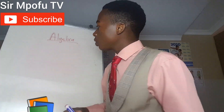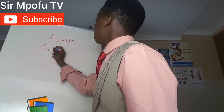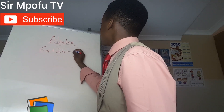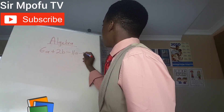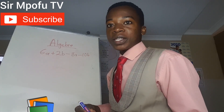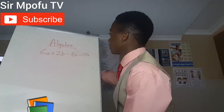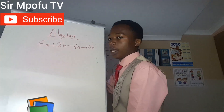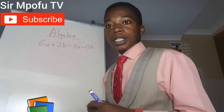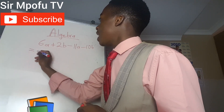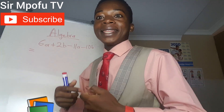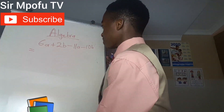Let us do another example. Let's say we have 6a plus 2b minus 11a minus 10b. How do you simplify this one? It's simple and straightforward. As I told you, as you'll be collecting like terms, you collect like terms with their signs.